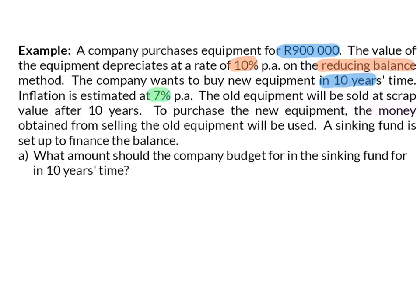To determine the value that the company should budget for, we are going to follow our three steps. Firstly, we need to determine the value that the old equipment can be sold for. We are given that the equipment depreciates at 10% per annum on the reducing balance method, and that is why we can immediately start substituting into this formula.